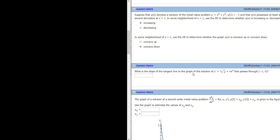What is the slope of the tangent line to the graph of the solution of this differential equation that passes through (-2, 4)? This problem is actually really simple but it does require some careful thought.